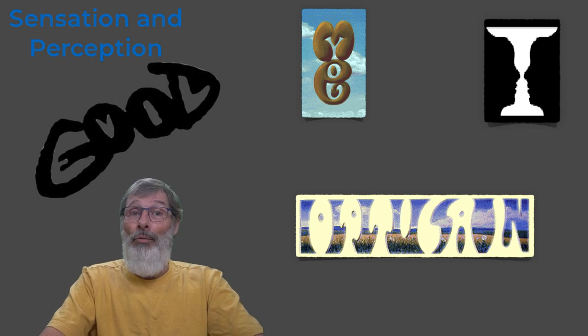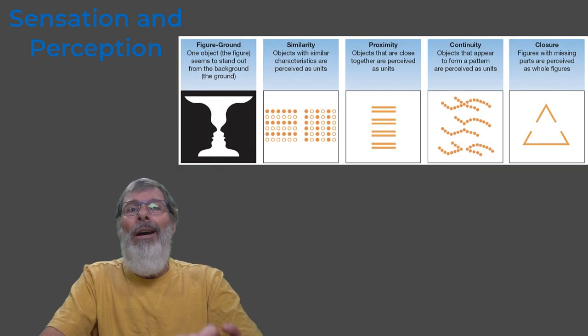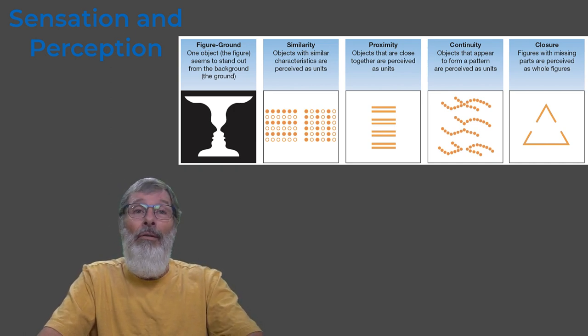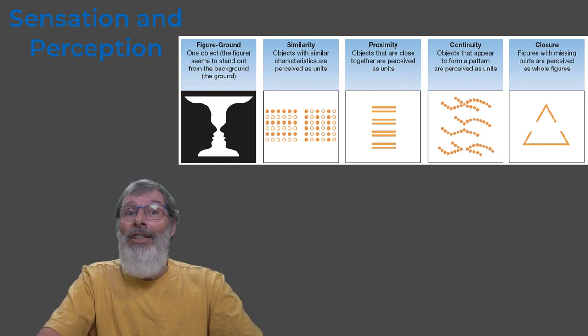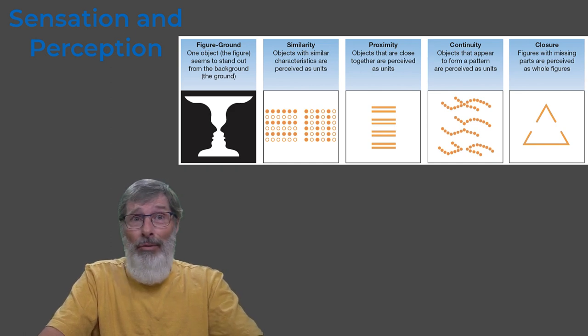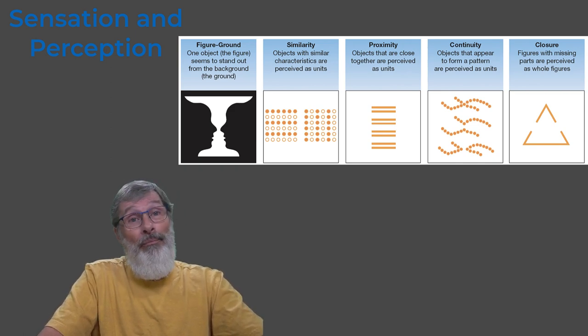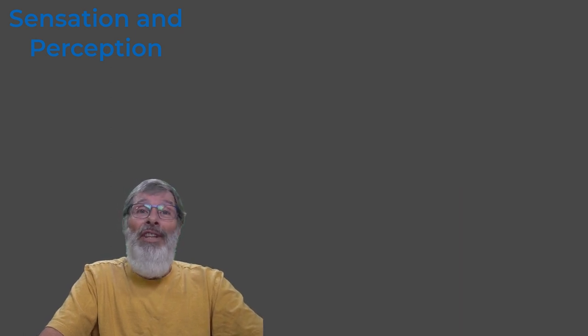Now there are some other Gestalt rules for organizing, including proximity, similarity, continuity, and common fate. Proximity just means that items that are closer together are likely to be seen as together. Whereas similarity, we perceive similar objects to belong to one another. And continuity is where we perceive a series of points or broken lines as having some unity, that even if it's an incomplete line, I can make out what that figure is, and that's continuity. The common fate: elements seen as moving together are perceived as belonging together.